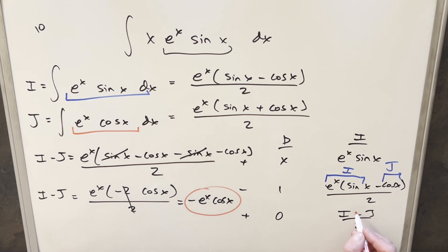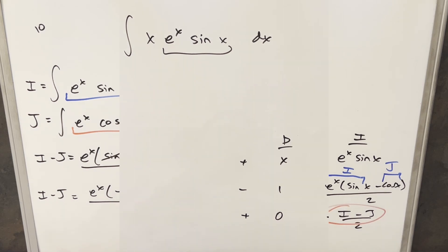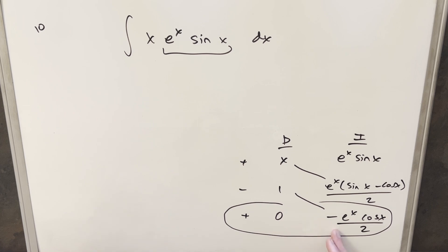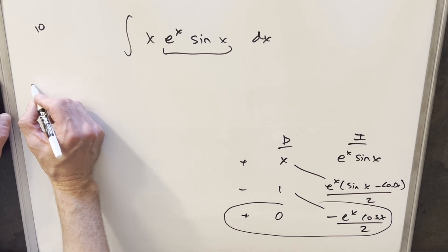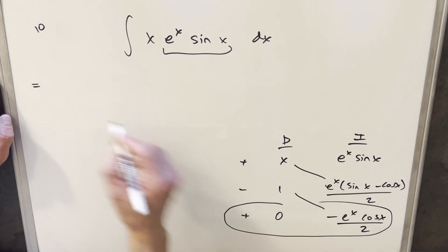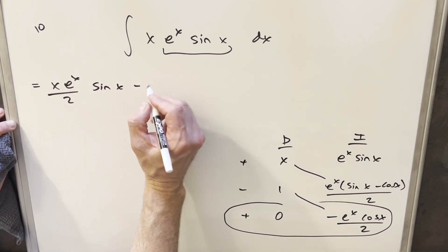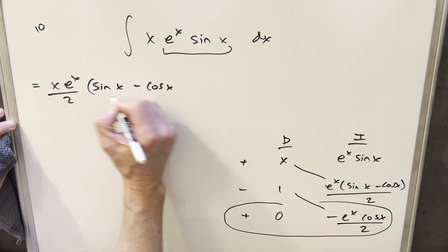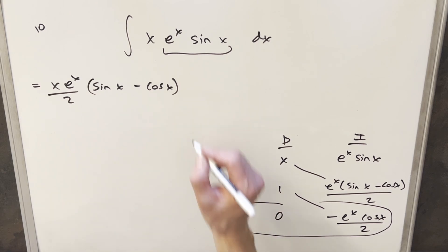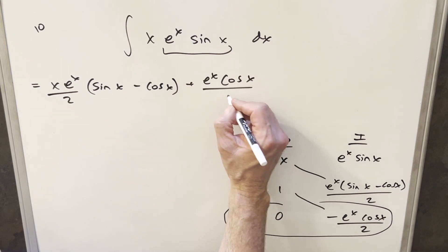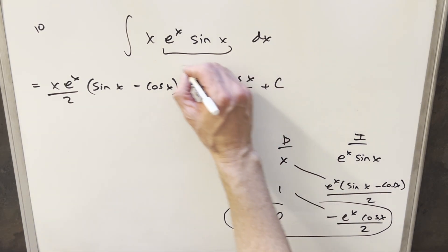So we'll take this value and plug it in for our i minus j. Now in order to finish this off, we have part of our solution on the diagonals. We would integrate the last row, but we're multiplying by zero, so that integral is just zero. All we need to do is copy down our solution. Distributing in the x, we're going to have x e to the x over 2 times (sine x minus cos x). And then minus 1 times minus is plus, so we're going to have plus e to the x cosine x over 2. Add a plus c, and that's it.